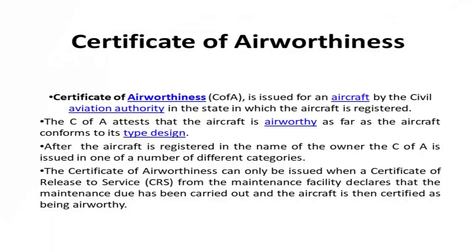The CoA can only be issued when a certificate of release to service from the maintenance facility declares that the maintenance due has been carried out and the aircraft is then certified as being airworthy. First, the aircraft has to be properly maintained. The certifying agency, the maintenance agency, should issue a certificate that the aircraft has been maintained properly as per the requirements of the manufacturer and the regulatory authority. Once certified, the certificate of airworthiness can be issued.